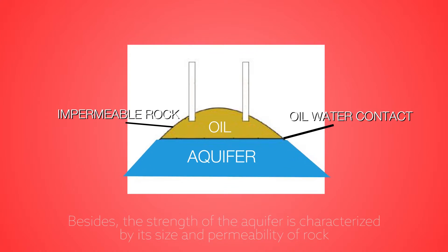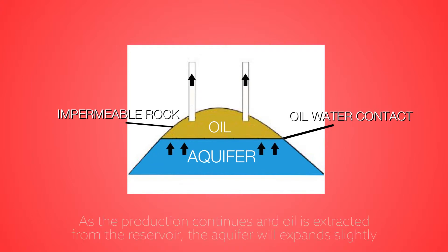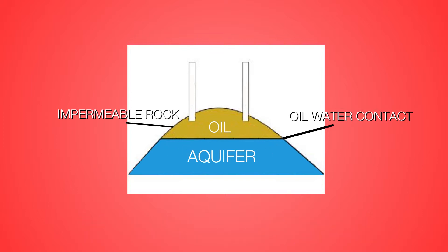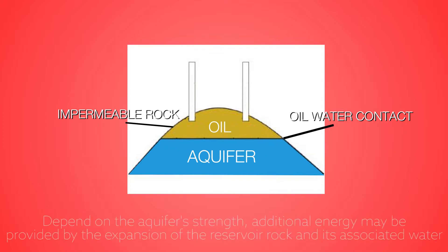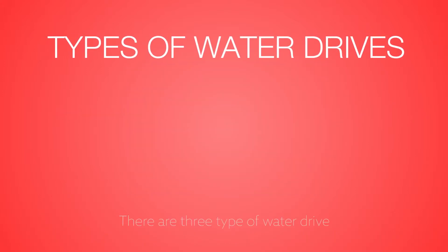The strength of the aquifer is characterized by its size and permeability of rocks. As the production continues and oil is extracted from the reservoir, the aquifer will expand slightly. Depending on the aquifer strength, additional energy may be provided by the expansion of reservoir rock and its associated water. There are three types of water drive.